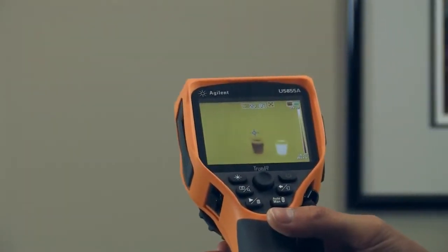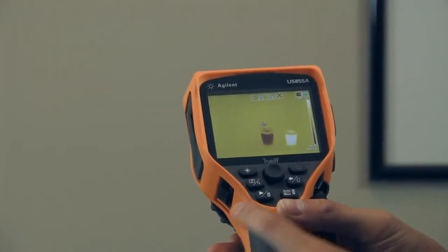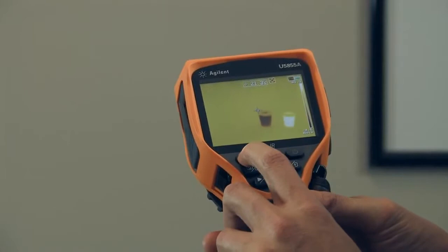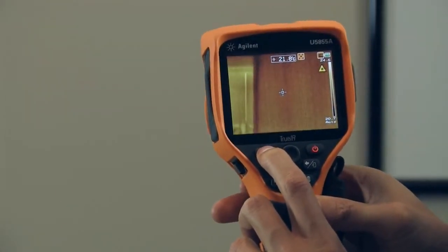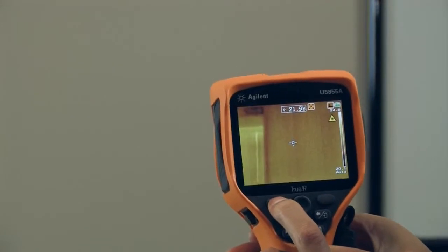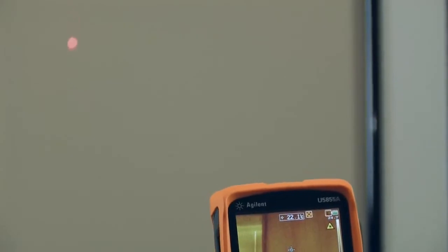Or if you are pointing at something that's kind of far away or you're in the thermal view and you don't know what you're looking at you can actually hold this star button down and we actually have a little laser pointer that will help you point out what you're shooting your camera at and help you identify what your target is.